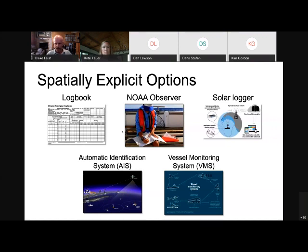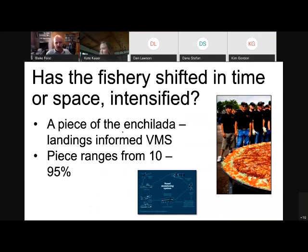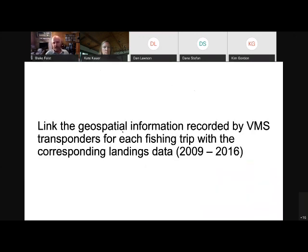That leaves the Vessel Monitoring System data, which is relatively consistent over time, available across the West Coast, and is about the only information we have for where fishing is occurring specifically in California waters. The rest of my presentation talks about how we work with the VMS data to identify where commercial fishing is occurring. The question remains: has the fishery shifted in time or space, or has it intensified, coincident with the dramatic increase in entanglements that started in 2014?